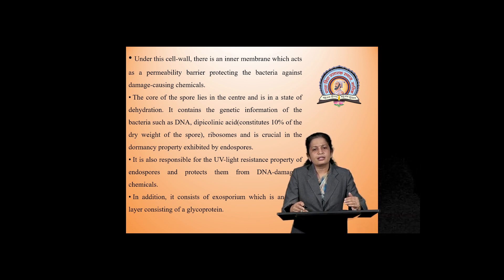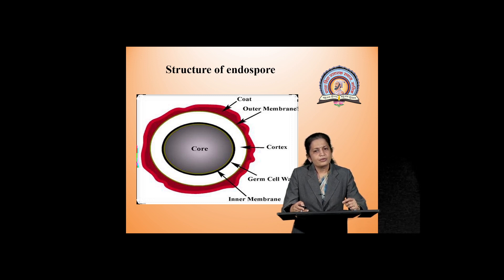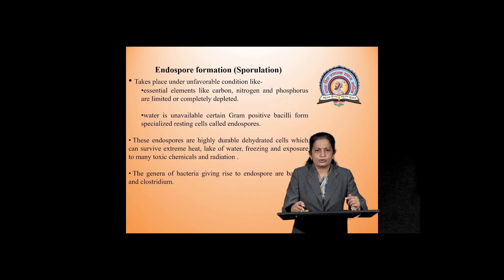In addition, in the spore there is presence of exosporium — this exosporium is an outer layer of glycoprotein. Now, this is the diagrammatic representation of the endospore. The inner part is known as the core. Outside the core there is the inner membrane, which is covered by the germ cell wall. Outside the germ cell wall there is a thick layer of cortex. The cortex has an outer membrane, and the exterior part of the endospore is known as the coat of the endospore.